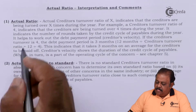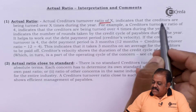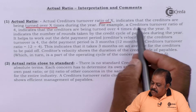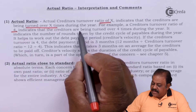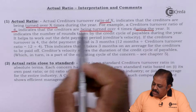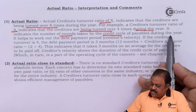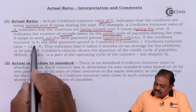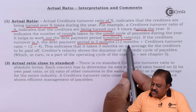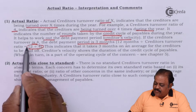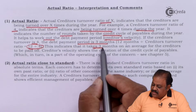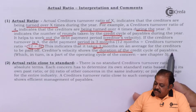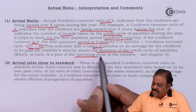Interpretation: An actual creditors turnover ratio of X indicates that creditors are being turned over X times during the year. For example, a creditors turnover ratio of 4 indicates that creditors are being turned over 4 times during the year, indicating the number of rounds taken by the credit cycle of payables. It helps to work out the debt payment period — creditors velocity. If the creditors turnover ratio is 4, the debt payment period is 3 months: 12 months divided by 4 equals 3 months. This indicates that it takes 3 months on average for creditors to be paid off. Creditors velocity shows the duration of the credit cycle of payables, which is part of the operating cycle of the concern.